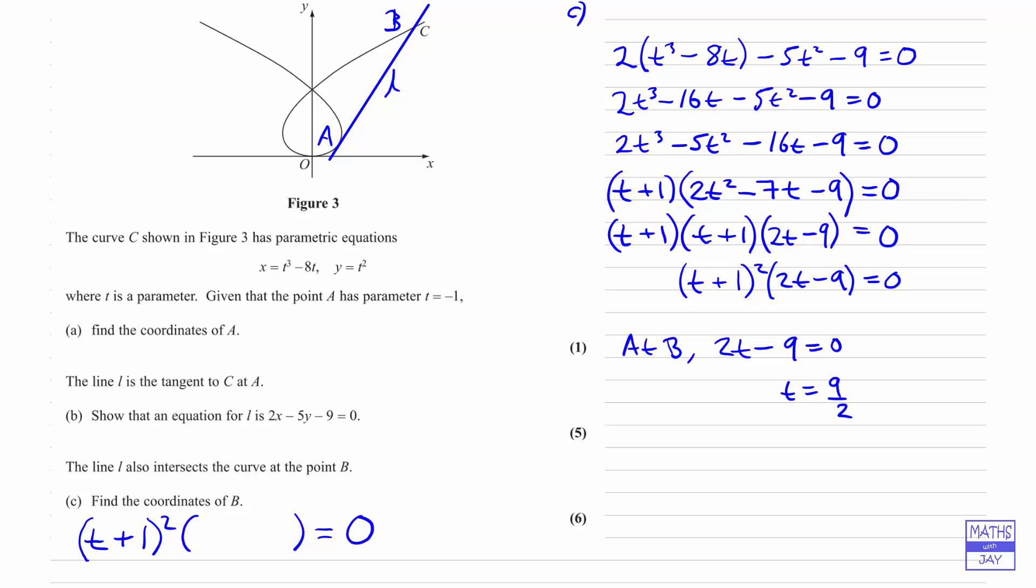So now all we need to do to write down the coordinates of B is to substitute this value of T into the equations for X and Y. So X is going to be 9 over 2 cubed minus 8 times 9 over 2.